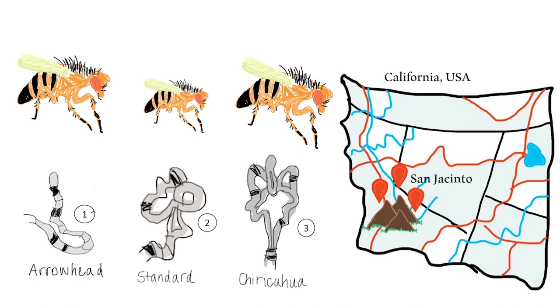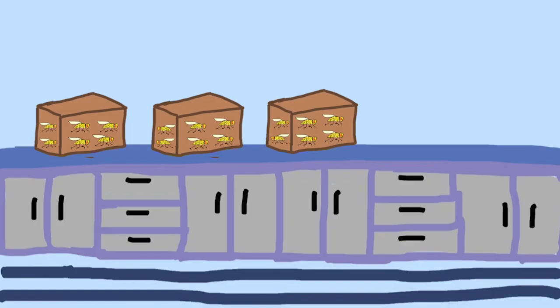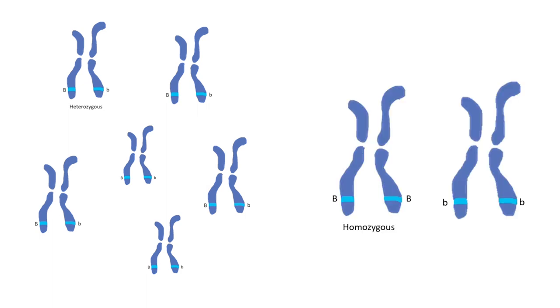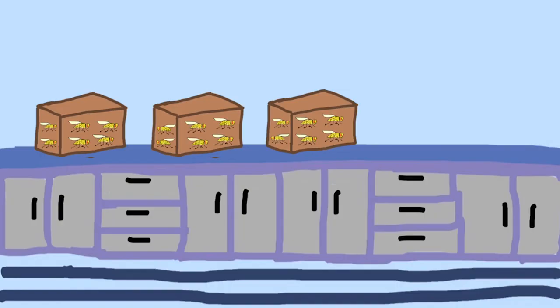In his controlled population cages, Dobzhansky observed the frequent interbreeding of flies with different gene arrangements. From this, he found an excess of inversion heterozygotes over homozygotes, and subsequently, the persistence of an inversion polymorphism in fruit-fly populations.